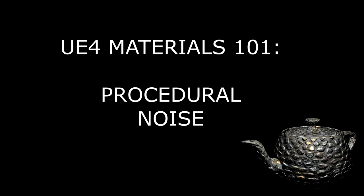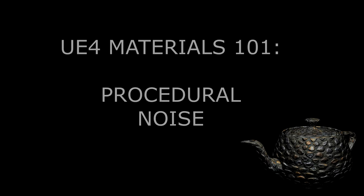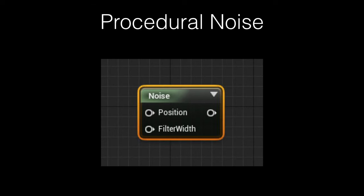Today we're going to start a new video series on the topic of Perlin noise, or procedural noise. In this video, we're going to go over what it is and cover a little bit of history about it. Then I'll show you the basics of how you can use it in Unreal. Then in the next couple of weeks, we're going to go over several examples of how it can improve your materials.